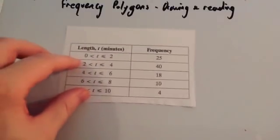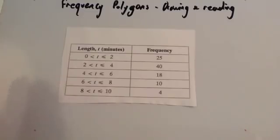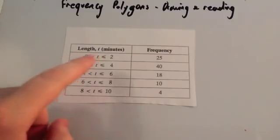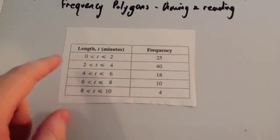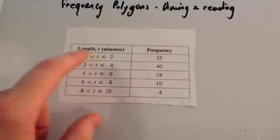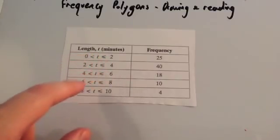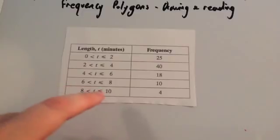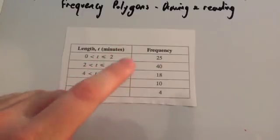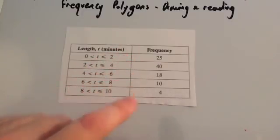In a frequency polygon question you'll be given a frequency table. You can see this one is for the length of telephone calls: 0 to 2 minutes, 2 to 4 minutes, 4 to 6 minutes, 6 to 8 minutes, and 8 to 10 minutes. And you've got your frequencies: 25, 40, 18, 10, and 4. We're going to draw a frequency polygon for that.